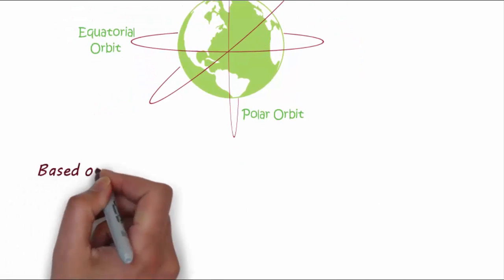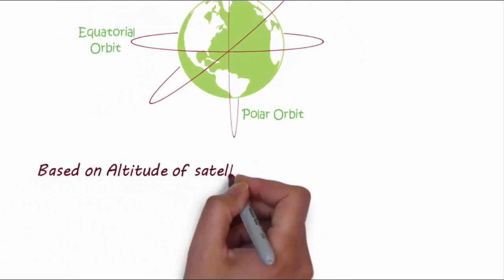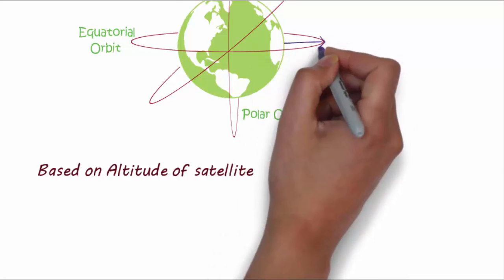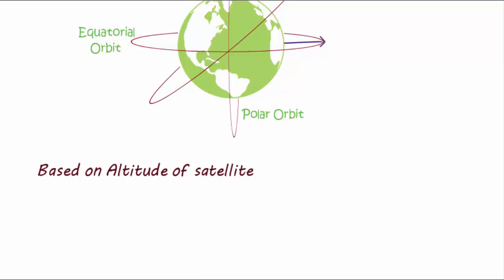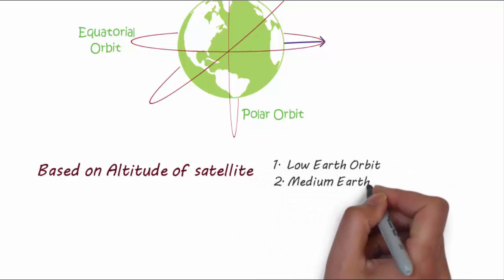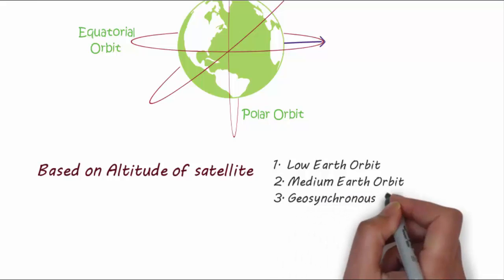Now the most important classification of satellite is based on altitude of the satellites. Altitude is measured from the surface of the earth. Based on altitude, satellites are divided in three types: low earth orbit satellite, medium earth orbit satellite, and geosynchronous earth orbit satellite.